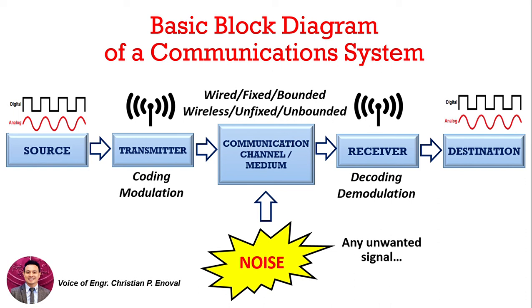This is the basic block diagram of a communication system, and it includes the source, the transmitter, the communications channel or communications medium (sometimes called transmission media), followed by the receiver, and finally the destination. Don't forget that noise is also part of the basic block diagram and is always introduced in our communications channel or communications medium.